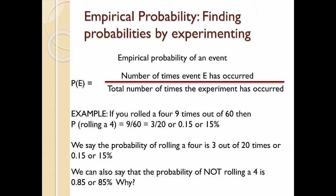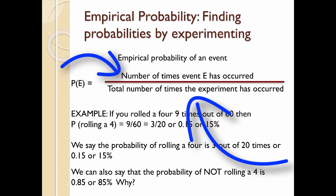So the empirical probability is finding probabilities by experimenting. P of E, the probability that an event will occur, that's what that notation means, is, and now we have a fraction. In the numerator on top, you've got the number of times the event has occurred, and on the bottom, the denominator, is the total number of times the experiment has occurred.